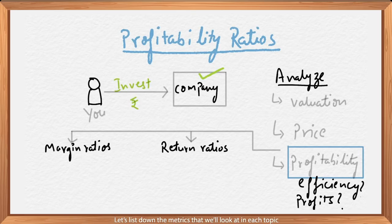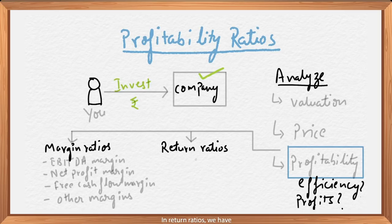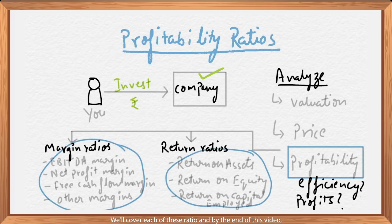Let's list down the metrics we'll look at in each topic. In Margin Ratios, we have EBITDA Margin, Net Profit Margin, Free Cash Flow Margin, and other Margin Ratios. In Return Ratios, we have Return on Assets, Return on Equity, and Return on Capital Employed. Don't worry if these terms sound unfamiliar — we'll cover each of these ratios, and by the end of this video, you'll be analysing your way to glory in no time.